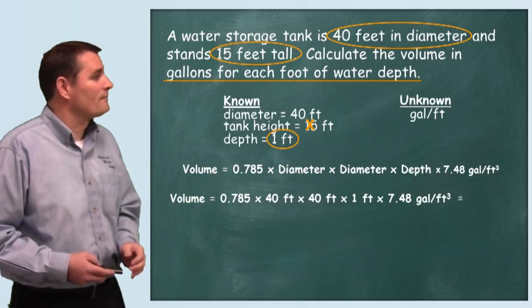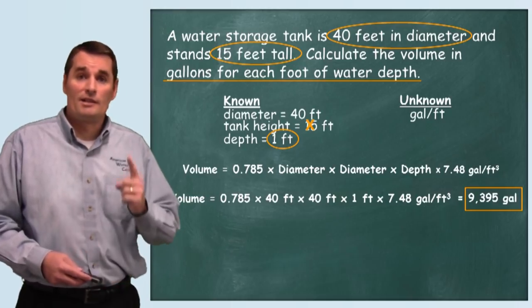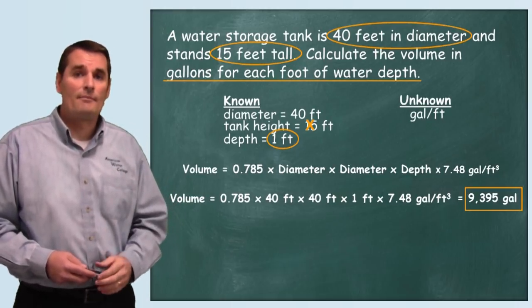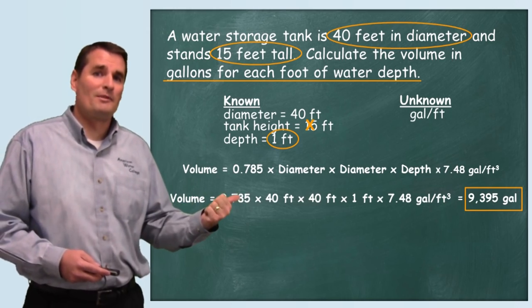When we do this math we find that there's 9,395 gallons for every one foot of depth in this tank. And that my friend is how this problem is solved.